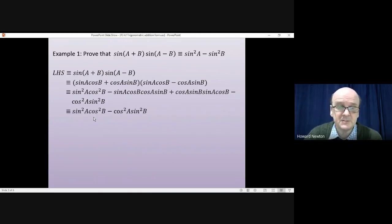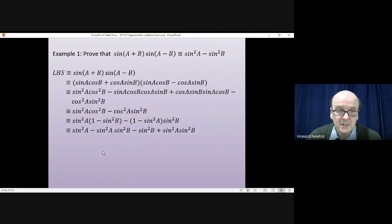We can do that using sin²+cos²=1, which means that cos² is equal to 1 minus sin². So substituting that in for cos² will give us this. Then multiplying out those brackets, we'll get sin²A minus sin²A sin²B minus sin²B plus sin²A sin²B.